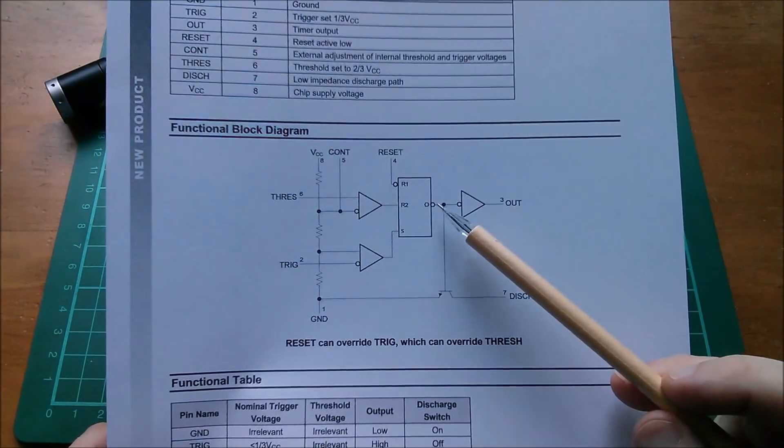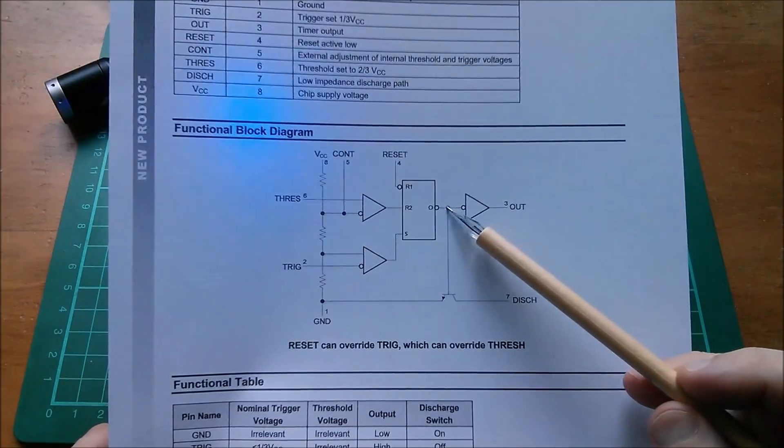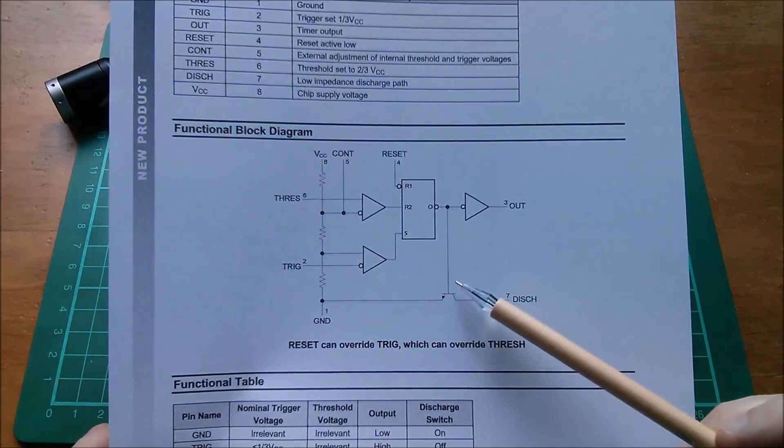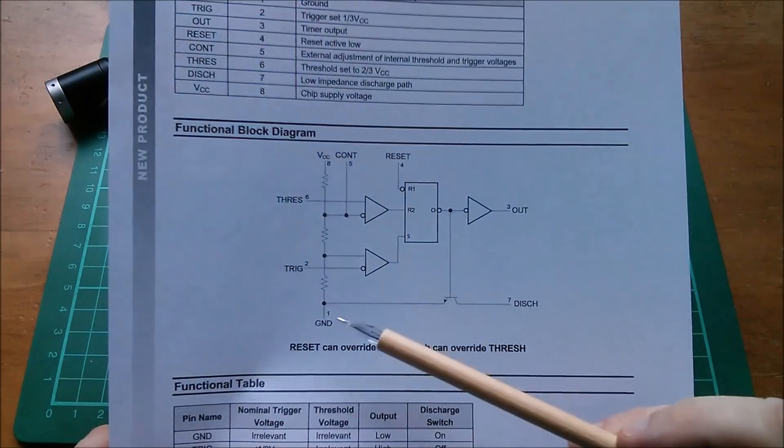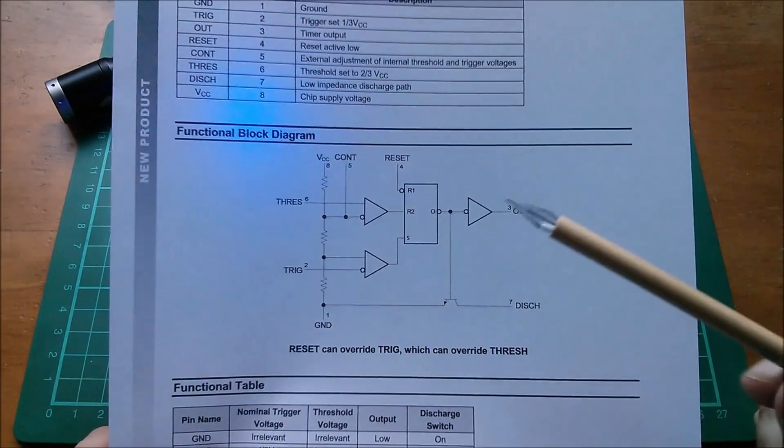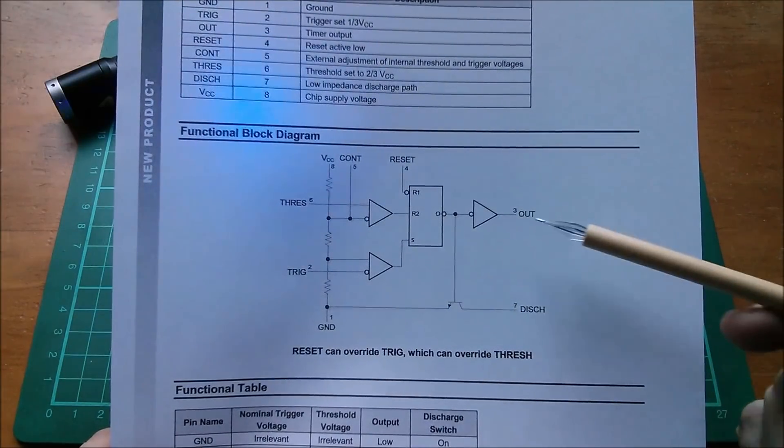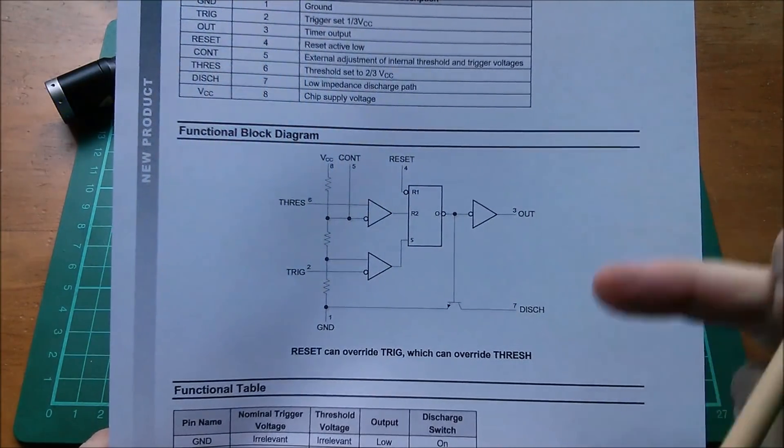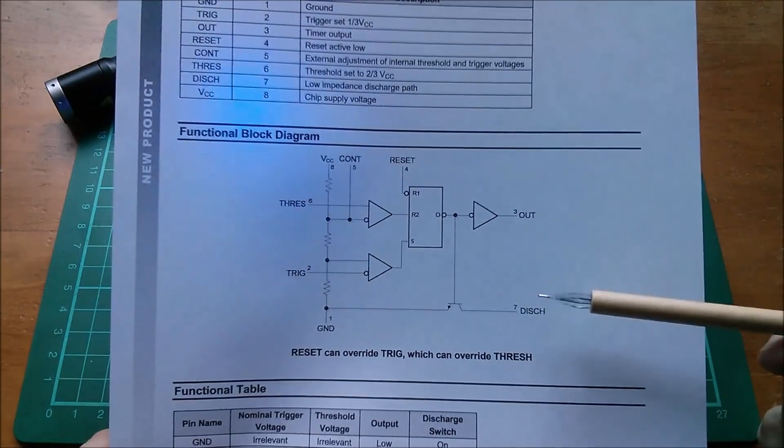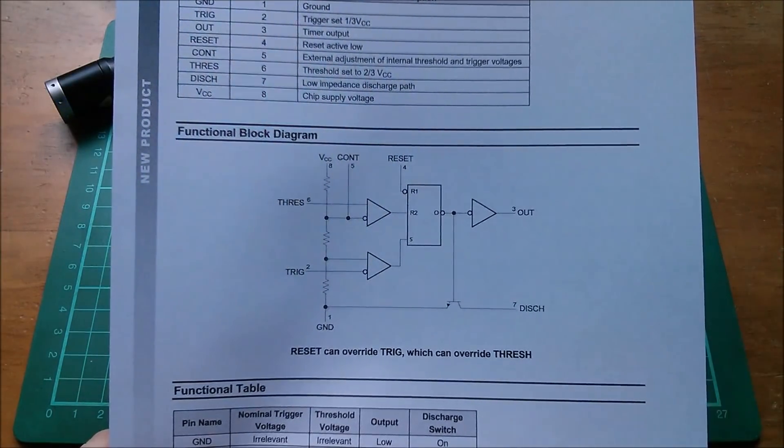If you see here, the output from the latch comes to this point. It goes out to discharge through this transistor. Well that acts as an inverter, NPN transistor, emitter down to ground. And there's also an inversion here. So it's the same signal. It's in the same phase. Output and discharge are essentially the same signal.